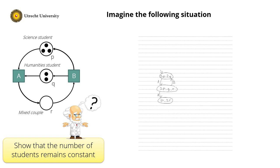Similarly, in the last state with one token in place P and two tokens in place R, I can fire transition B to return to the state before. So this is the complete reachability graph. I observe that the initial marking with three tokens in P and two tokens in Q is a home marking, so the whole net is reversible. But how do I show that the number of students remains constant in each marking?